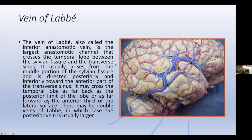The text of this lecture was taken from Rotten's lectures. In the experience of Dr. Rotten, based on silicon injection of 20 hemispheres, he found the vein of Labbé most commonly in the middle tier of the temporal lobe.